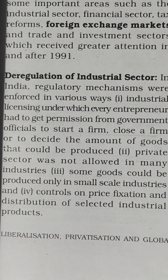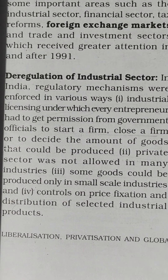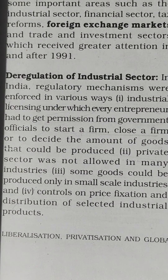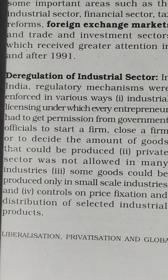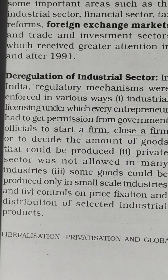Deregulation of the industrial sector. In India, regulatory mechanisms were enforced in various ways. First, industrial licensing, under which every entrepreneur had to get permission from government officials to start a firm, close a firm, or decide the amount of goods that could be produced. Second, the private sector was not allowed in many industries. Third, some goods could be produced only in small-scale industries. And fourth, controls on price fixation and distribution of selected industrial products.